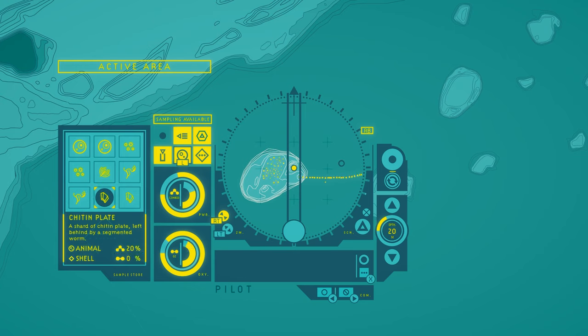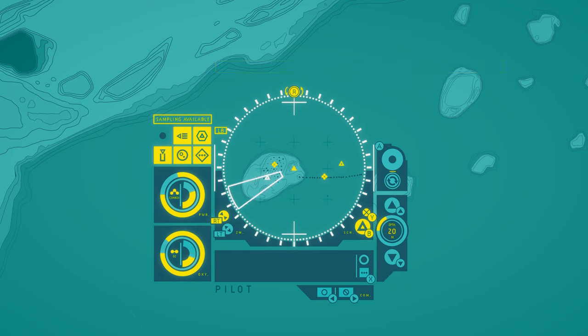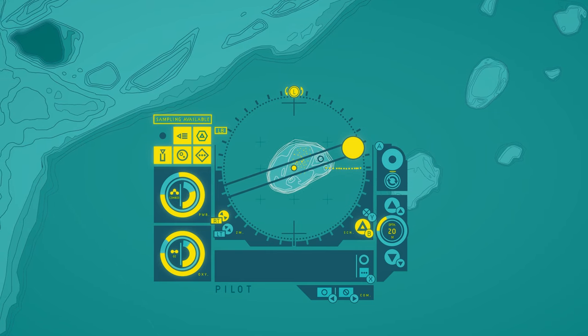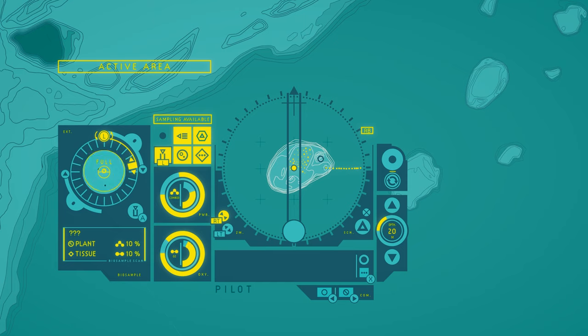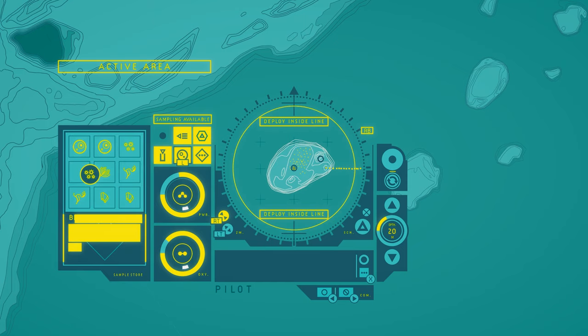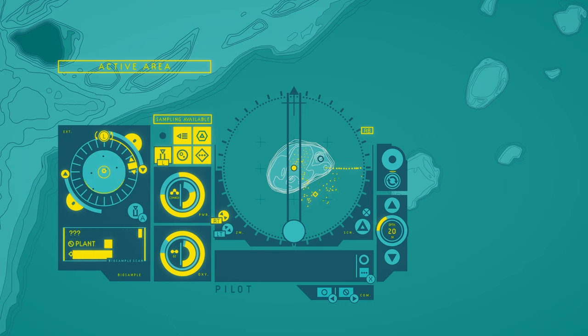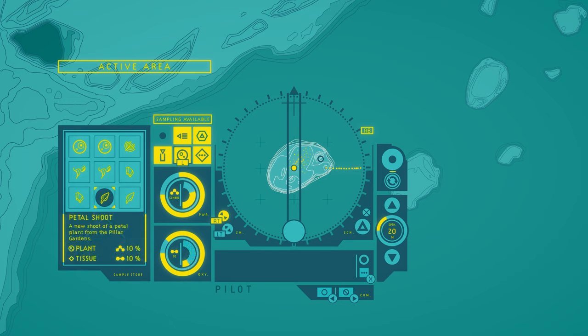Chiton plate. A shard of chiton plate left behind by a segmented worm. Germinating garden. These small, young petals are starting to open up to the three suns of Gliese 667cc. This place will be even more beautiful one day. Another new thing. Okay, well, more bright pollen. Don't need it at all. Petal shoot. A new shoot of a petal plant from the pillar gardens.